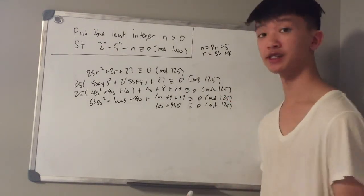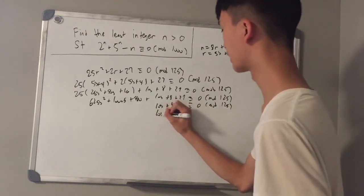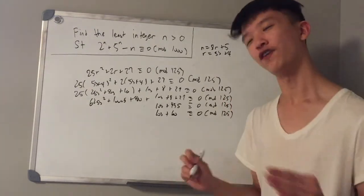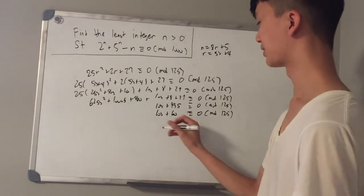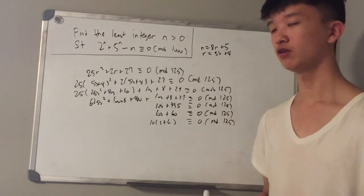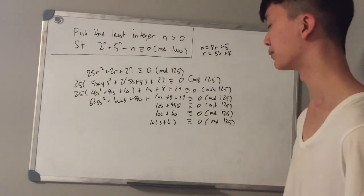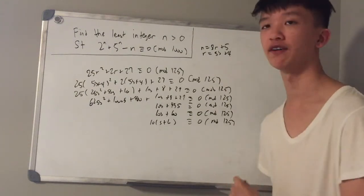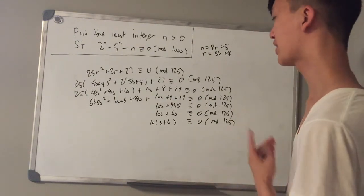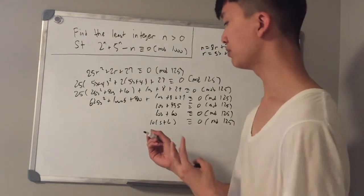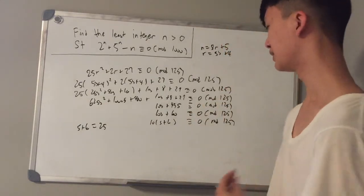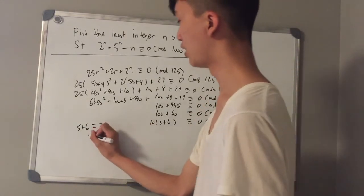Since 435 is congruent to 60 mod 125, we have 10s plus 60 is congruent to 0 mod 125. Factoring out 10 gives 10 times (s + 6) congruent to 0 mod 125. Since 125 equals 5 cubed, we need three factors of 5. Since 10 already contributes one factor of 5, s plus 6 must contribute two more factors, so the minimum value of s plus 6 is 25.